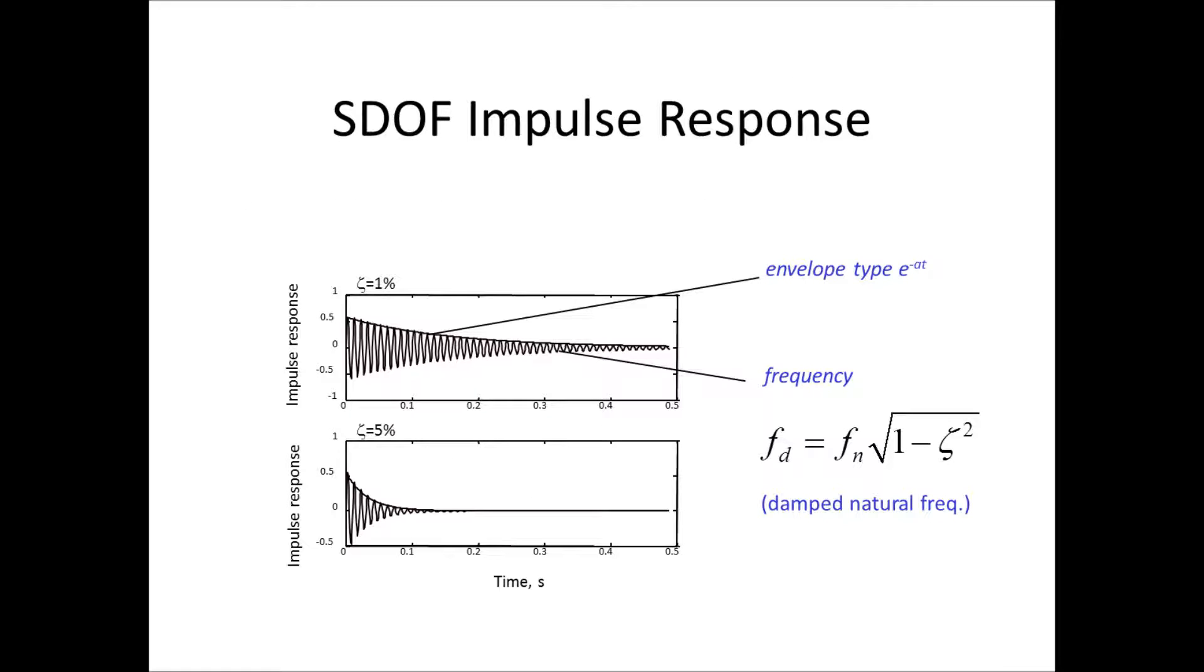So, here you see the SDOF impulse response. The impulse response of a single degree of freedom system consists of an exponentially decaying sine. Here we see it for two different damping ratios.